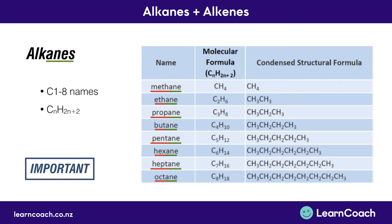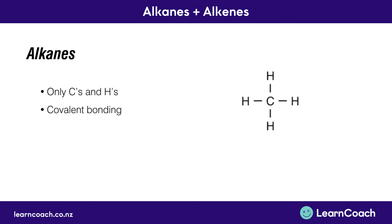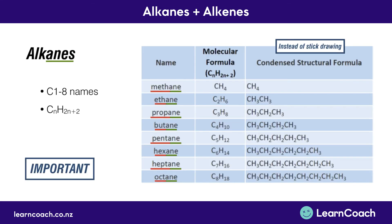An important formula you should remember is CnH2n+2. This means for alkanes, for every carbon you have, you're going to have twice as many hydrogens plus two extra hydrogens. The condensed structural formula on the right-hand side of the table is used instead of the stick drawing. The stick drawing is our structural formula, which visually shows where the carbons and hydrogens are in relation to each other, whereas the condensed structural formula has all the same information but takes out the lines and writes down what you have.